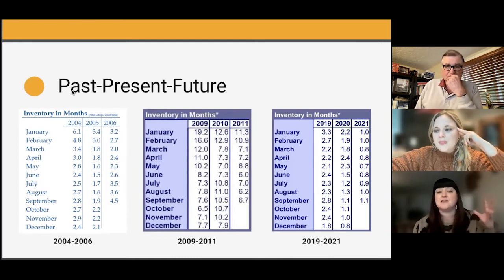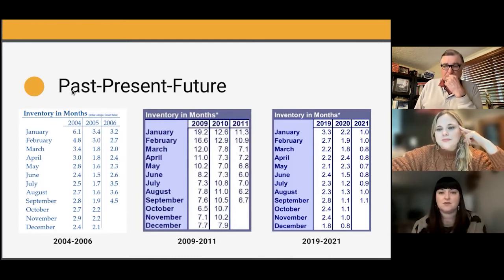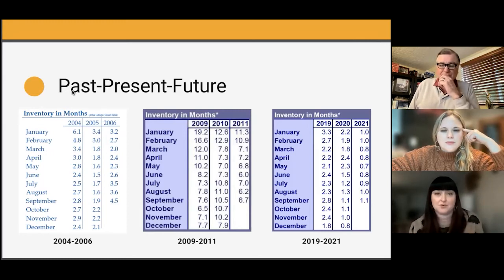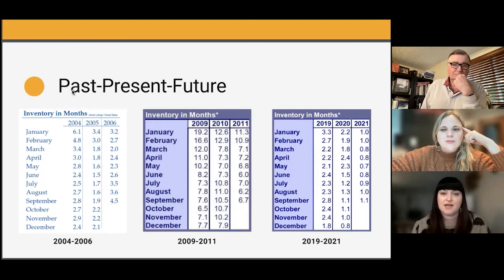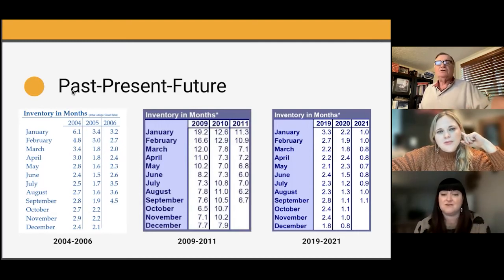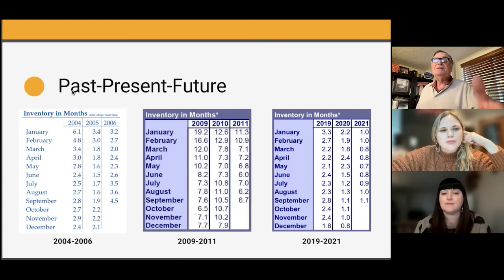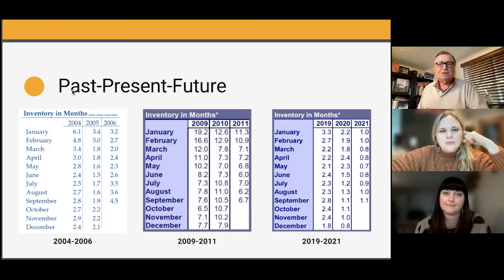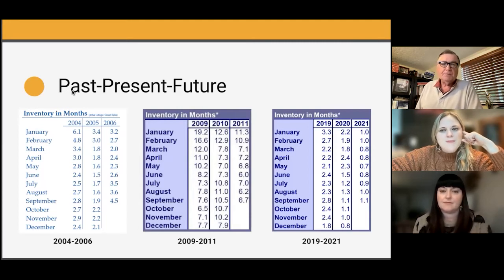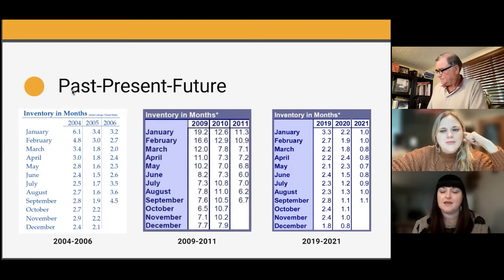That is just insane — a complete buyer's market. We should clarify: a balanced market, where there are enough buyers and sellers, is about three to four months of inventory. Anything below that is a seller's market; anything above is a buyer's market. So in 2009 with 19 months of inventory, there was enormous pressure on prices — prices just kept dropping through 2012. And of course that was compounded by all the foreclosures, short sales, and people underwater on their homes.